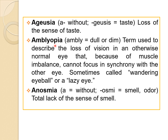The next term is amblyopia. 'Ambly' means dull or dim. Amblyopia is a term used to describe the loss of vision in an otherwise normal eye, because of muscle imbalance it cannot focus in synchrony with the other eye. Sometimes it is called a wandering eyeball or a lazy eye.